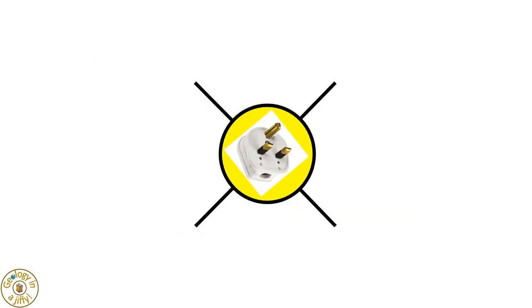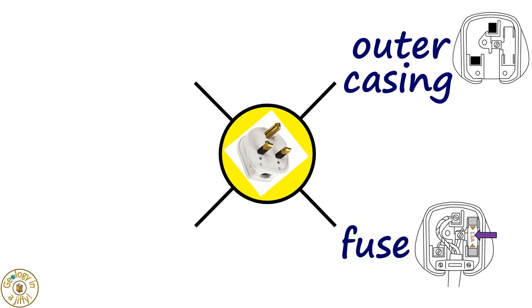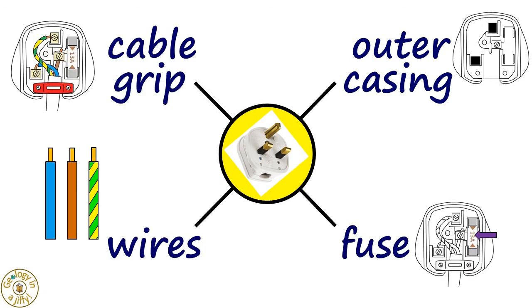The four parts of a plug: the outer casing, the fuse, the wires, and the cable grip.